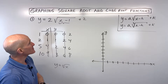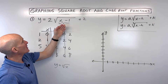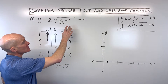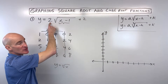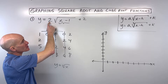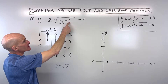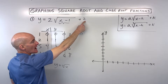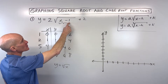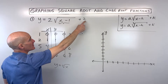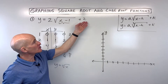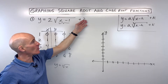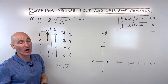One thing students sometimes ask is what order to apply these transformations. When it's in this form, you can do the vertical stretch, shrink, or reflect first, then the horizontal shift next, and then the vertical shift last. Or you can do the horizontal shift first, then the stretch/shrink, then the vertical shift — but you want to make sure you do the vertical shift up or down last, otherwise you'll get the wrong graph.